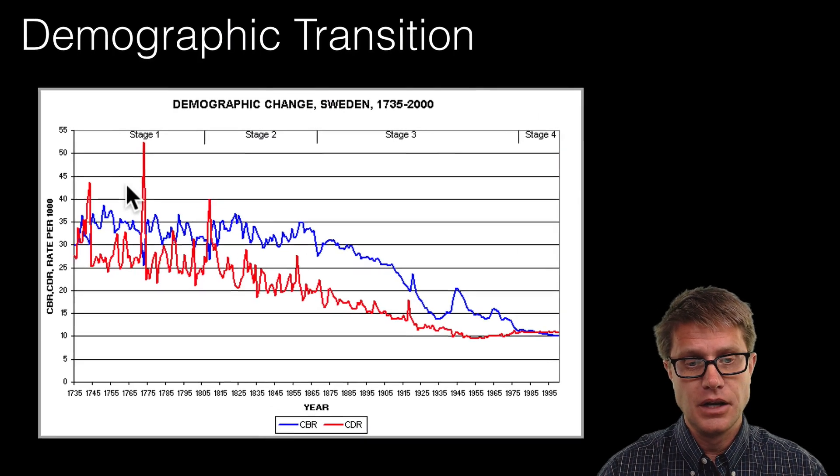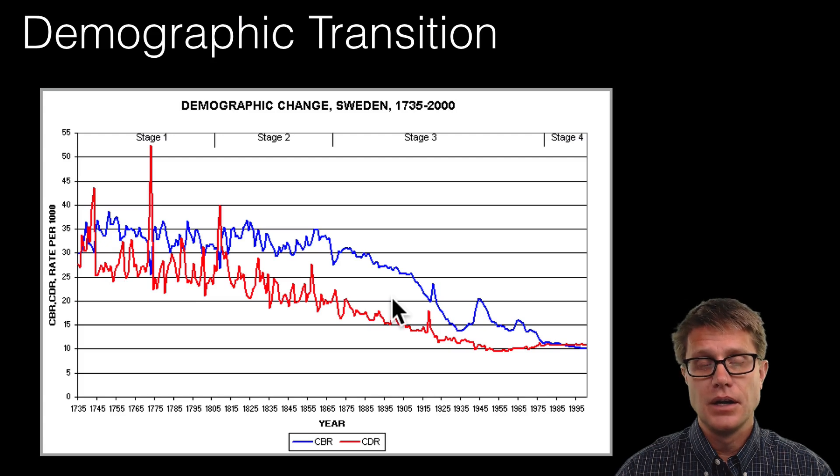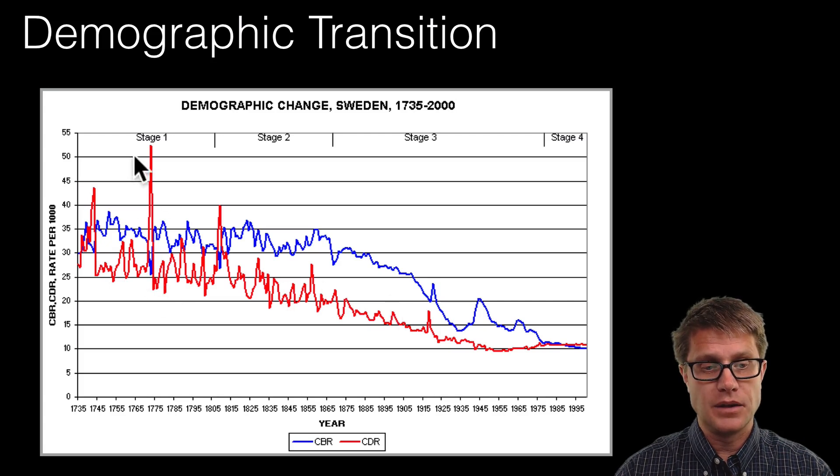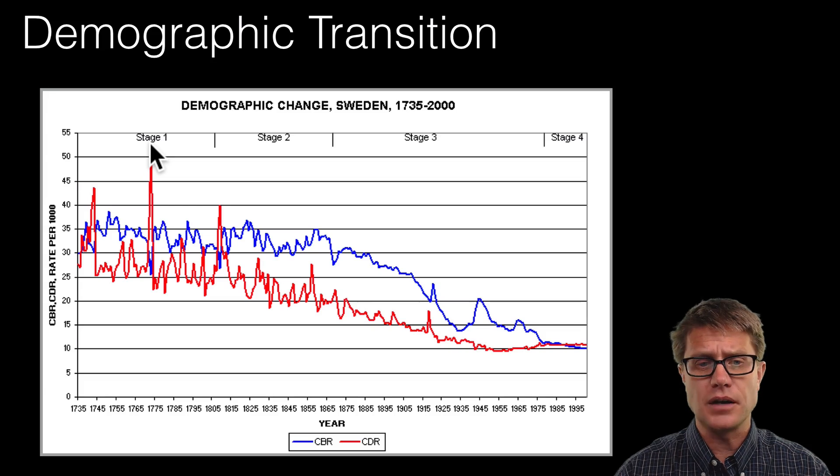So in certain countries we can see the demographic transition occurred. So this is Sweden. What we are looking at here is going to be the birth rates in blue and then the death rates in red. So if we look way back in time in the 1700s there is a huge increase in death rates. So this was a smallpox outbreak.